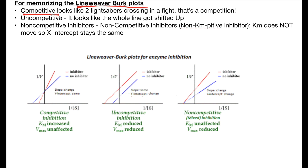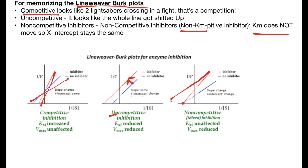For competitive, I remember that it looks like two lightsabers crossing. For uncompetitive, the line shifts up, so I remember 'uncompetitive up.' For non-competitive, I think 'non-K-impetitive,' meaning my KM does not move so my x-intercept stays the same. Another way to memorize it is that if you take a line and draw it like this, it kind of makes the graph look like a capital N.